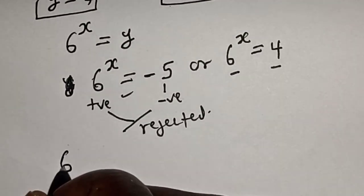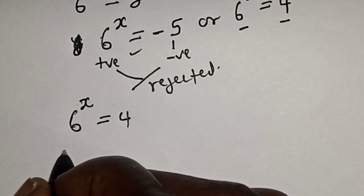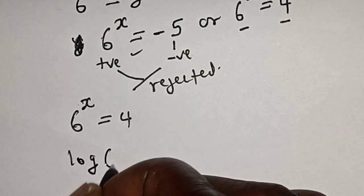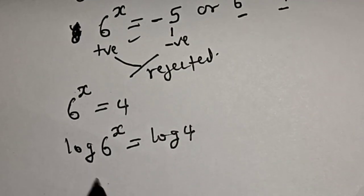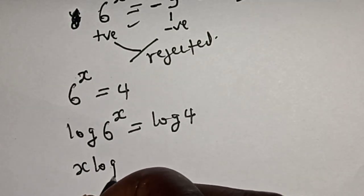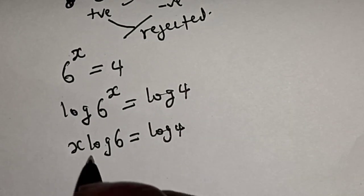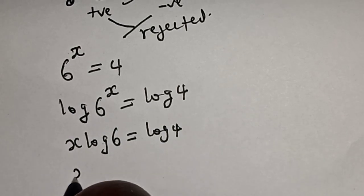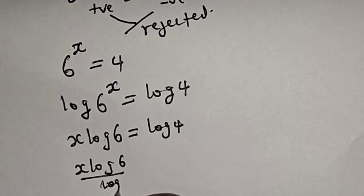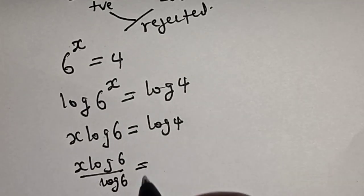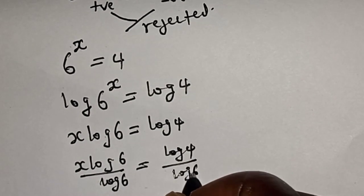Now we have 6 raised to power s is equal to 4. Let's take the log of both sides: log of 6 raised to power s equals log 4. This gives s times log 6 equals log 4. Dividing both sides by log 6, we have s times log 6 divided by log 6 equals log 4 divided by log 6.